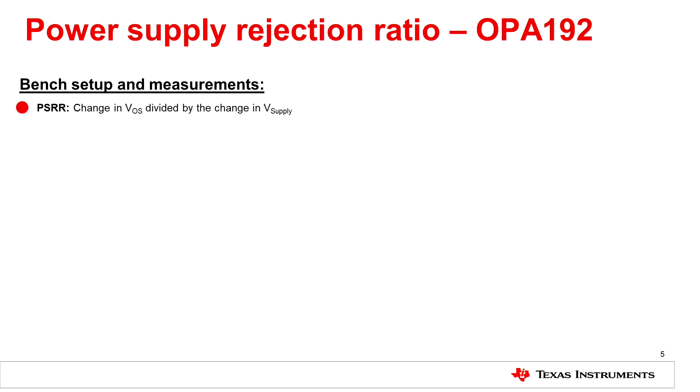Before we begin measuring power supply rejection ratio of a linear amplifier, let's recall the definition of power supply rejection ratio. Power supply rejection ratio is defined as the change in offset voltage divided by the change in supply.